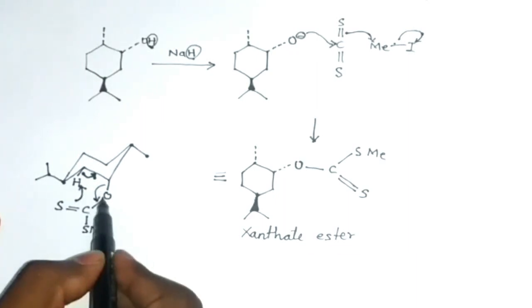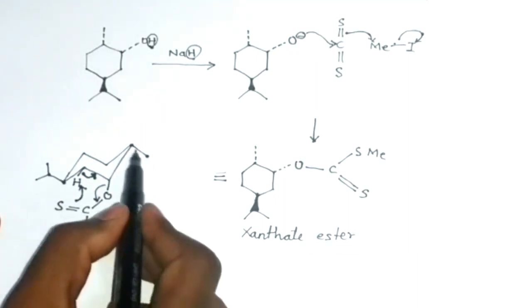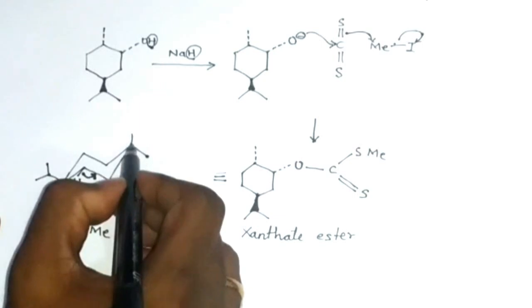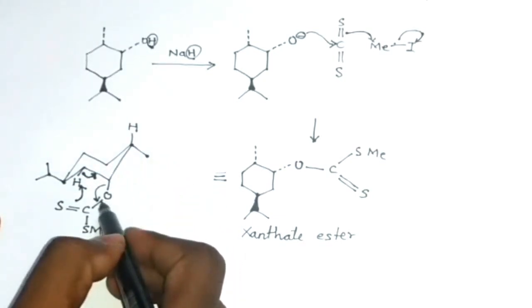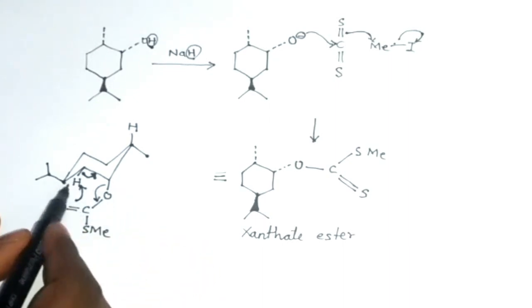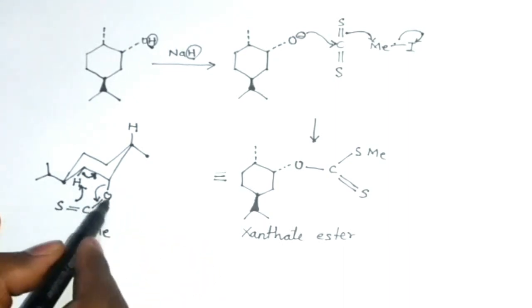This group cannot attack this part since the hydrogen is at the axial position because it is far; it cannot react. So syn elimination is possible only in this manner.